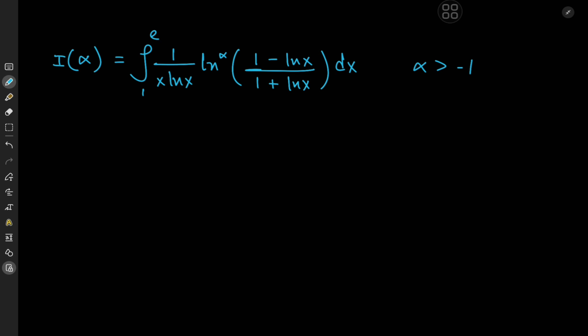So we have lots of logarithms being thrown around here and there. What we have is the integral from 1 to e of 1 over x times log x times log to the alpha of (1 minus log x) divided by (1 plus log x) dx, where the alpha parameter is greater than negative 1.